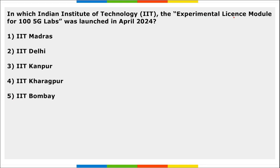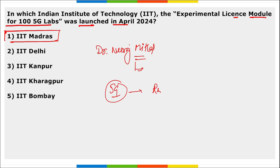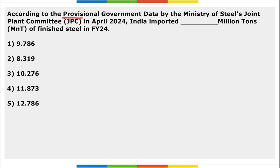In which IIT was the experimental license module for the 5G Labs launched in April? It was at IIT Madras. The experience and license module for the 5G Lab — fifth generation lab — was virtually launched at IIT Madras, and it was launched by Dr. Neeraj Mittal, who is the Secretary of the Department of Telecommunication. The aim of this 5G Lab is to simplify the process for experiential learning for academic institutions and to foster skill development and encourage students to take up startup communities in 5G technology.